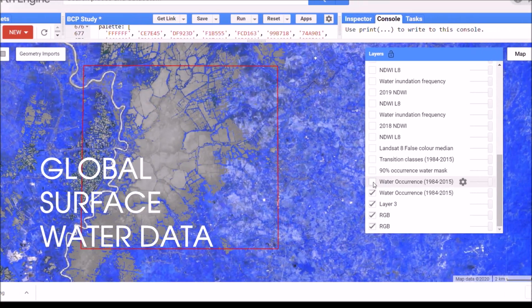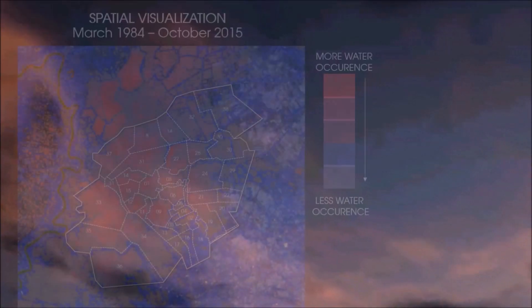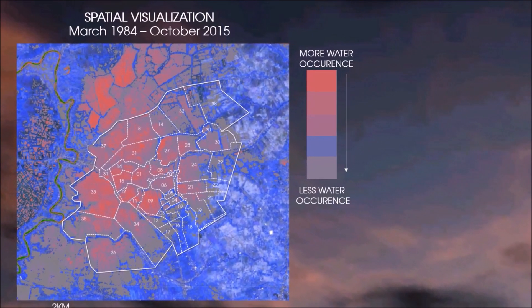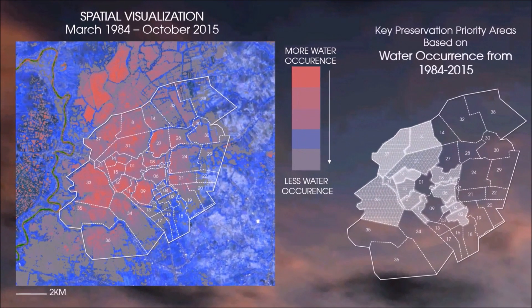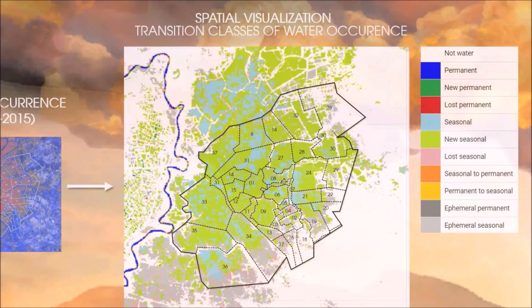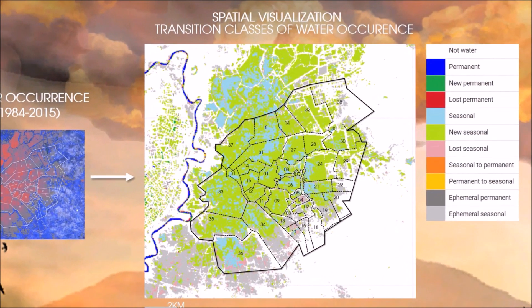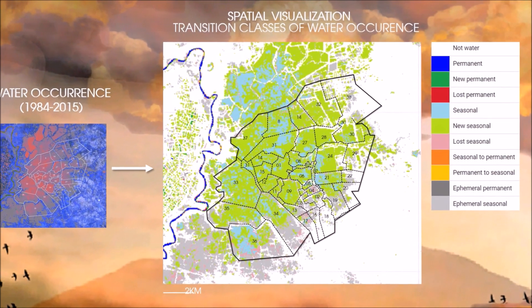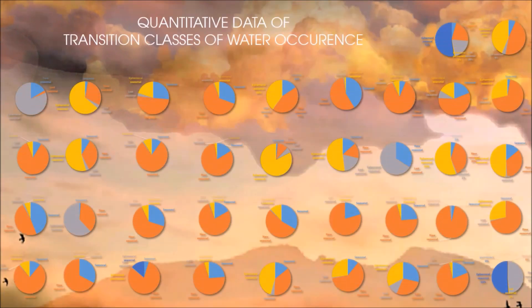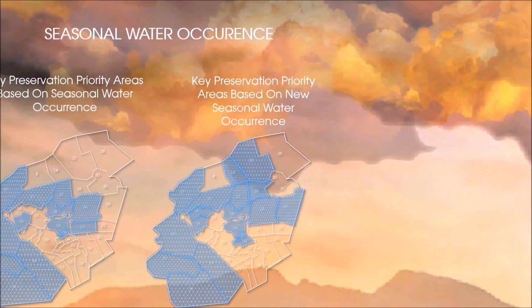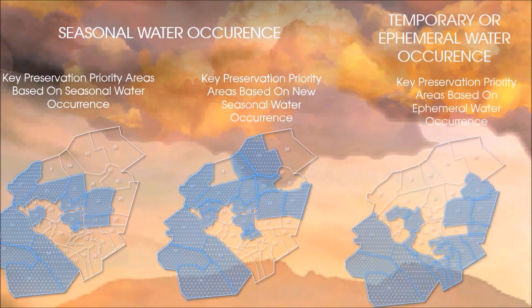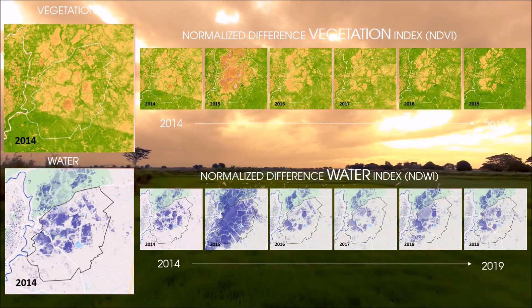Using global surface water data, we first showed where and how often water occurrence is prevalent from 1984 to 2015. We then showed the transition classes of water occurrence to identify preservation areas based on data of seasonal water occurrence and areas with ephemeral or temporary water occurrence.